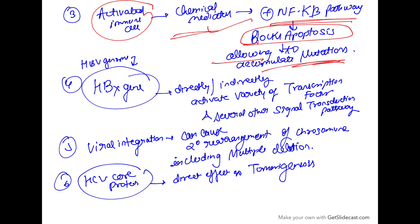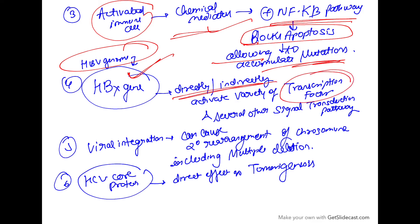The HBV genome contains a gene called the HBx gene. This HBx gene directly or indirectly activates a variety of transcription factors and several signal transduction pathways, causing continuous proliferation of these cells. So the HBx gene is specifically implicated in HBV-related carcinogenesis.